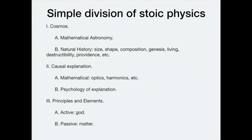The third division is into the principles and elements. There are essentially two principles of Stoic physics. The first is an active principle, identical with God and a bunch of other things. The second is a passive principle, essentially identified with matter. The basic picture is that what really exists is a vast amount of otherwise unstructured, unqualified matter, and a God-like mind or reason that imposes order and form on that unqualified matter. When we look out at the cosmos, we're seeing a rationally organized continuum of matter containing different kinds of beings.